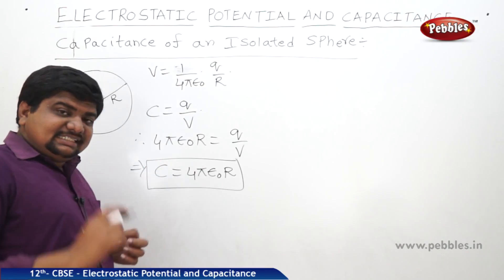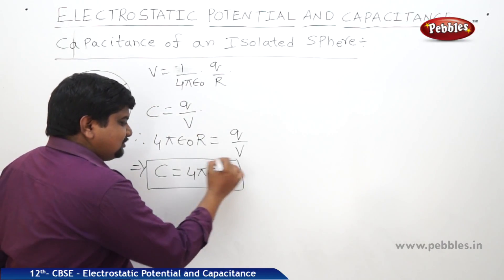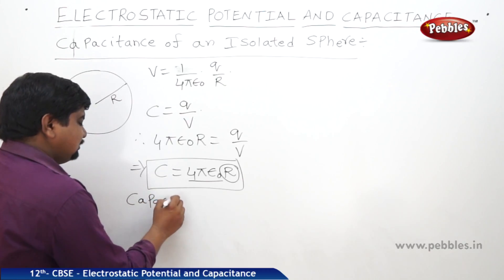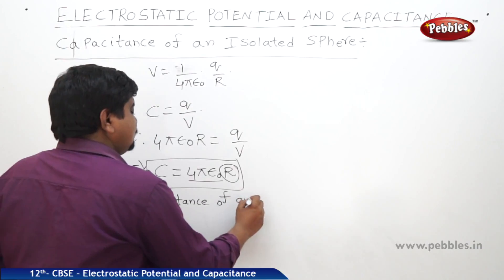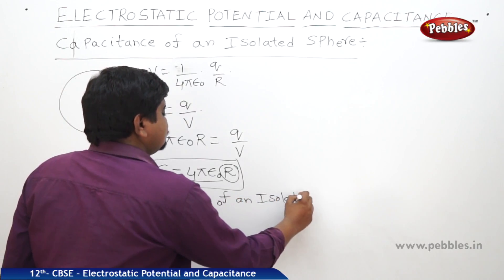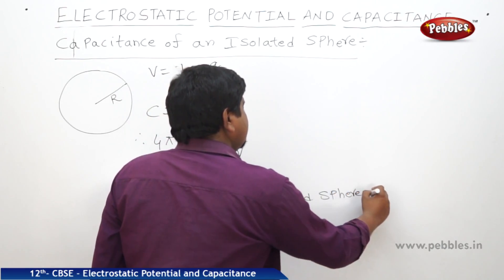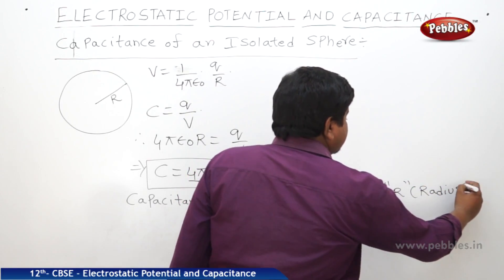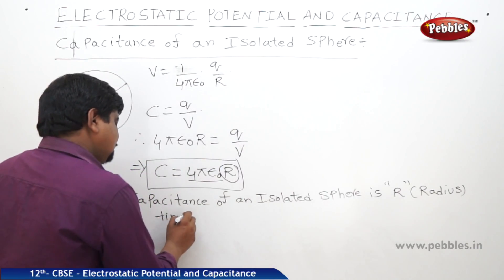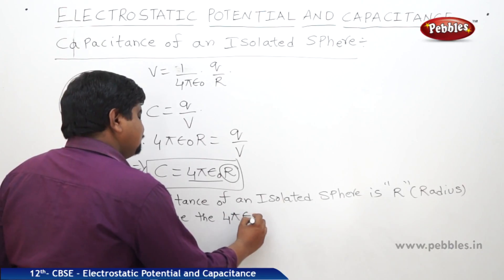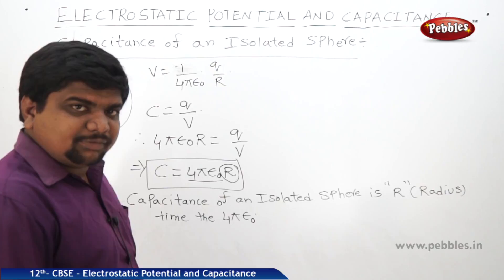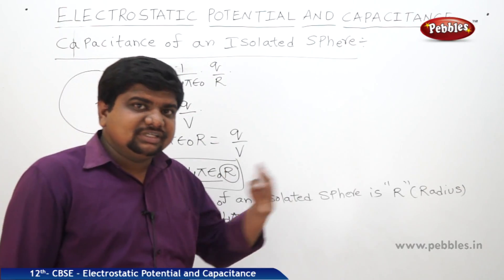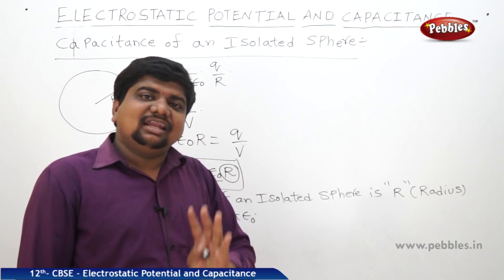The capacitance of an isolated sphere is R times 4πε₀, where R is the radius. Note that 1/(4πε₀) = 9 × 10⁹, so 4πε₀ = 1/(9 × 10⁹). This is the complete expression for the capacitance of an isolated sphere. Next, we will discuss the capacitance of a parallel plate capacitor, both in the absence and presence of a dielectric medium.